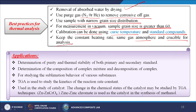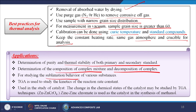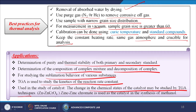Applications of TGA: determination of purity and thermal stability of both primary and secondary standards; determination of the composition of complex mixtures and decomposition of complexes for studying sublimation behavior of various substances; TGA is used to study the kinetics of reaction rate constants; and it is used in the study of catalysts — the change in chemical states of the catalyst may be studied by TGA, for example zinc chromate used as a catalyst in the synthesis of methanol.